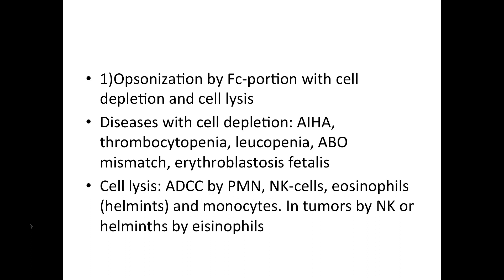ABO mismatch is a problem with a mismatch in blood groups. For instance, if patient A has type A blood while patient B has type B blood, patient A will have anti-B antibodies while patient B will have anti-A antibodies. If one of them gives blood to the other, the recipient will have antibodies against the donor's blood, causing similar problems. The spleen might get enlarged and even the liver to some extent.